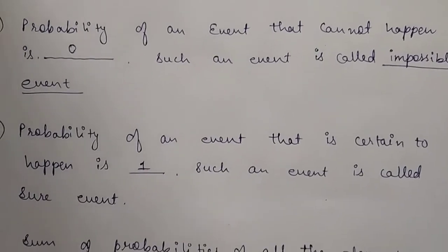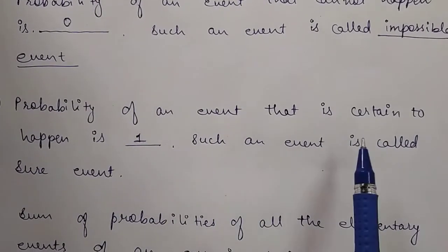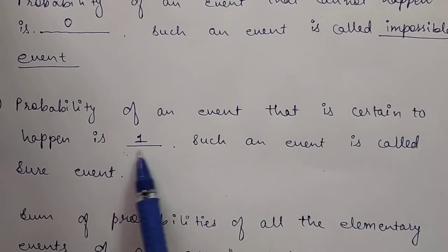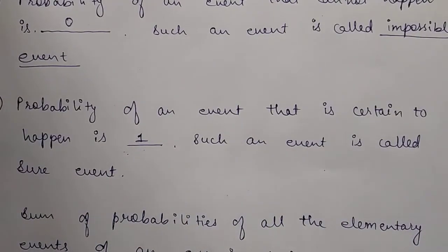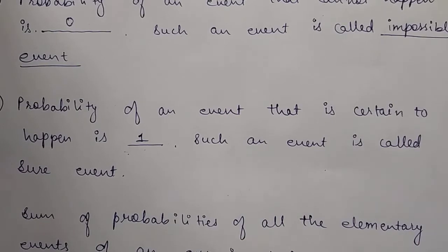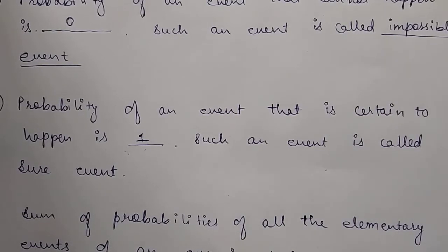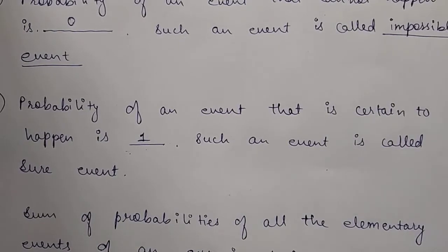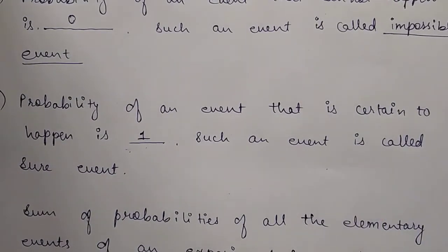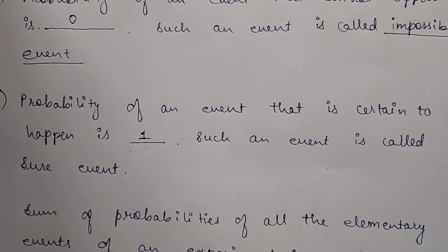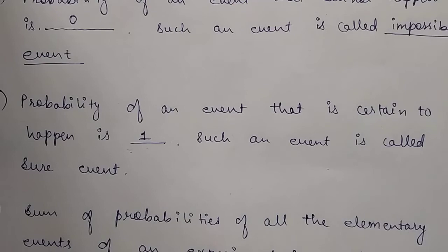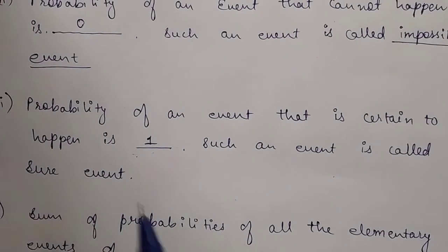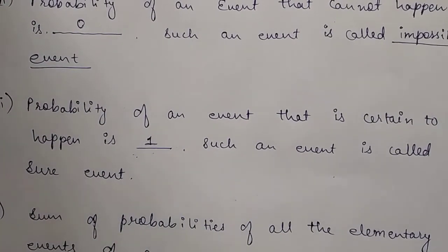Let's move on to the third question. The probability of an event that is certain to happen is 1. Such an event is called a sure event. An event that is definitely going to happen, its probability will always be 1. Certain means it's definite to happen. Any event that we know will definitely happen, it is going to happen for sure. That is why it is called a sure event and the probability of that event is always 1.